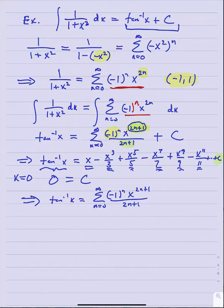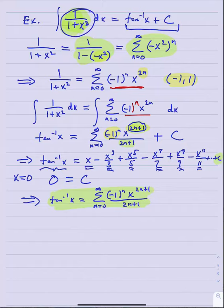Now we have another basic power series that you'll see in the list of important power series. We got to it by taking the antiderivative of a very basic geometric series we know. Why did we think to look at this function? Because when I look at one over one plus x squared, it's obviously a geometric series and it happens to have a very simple antiderivative.